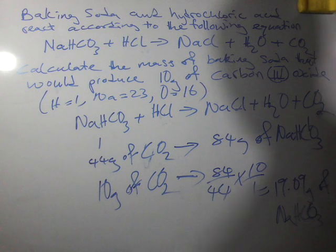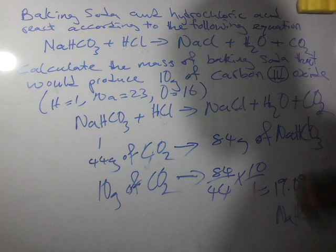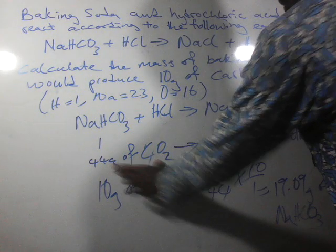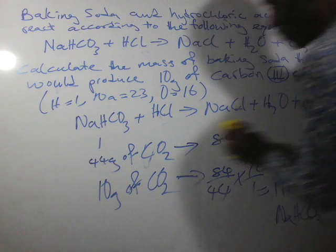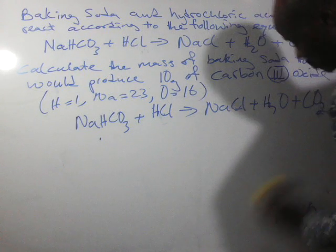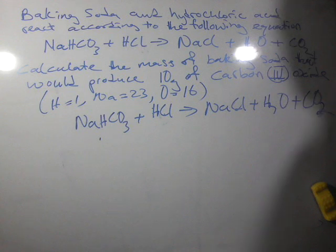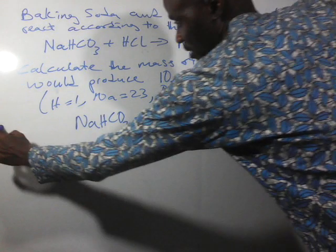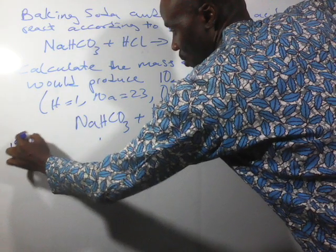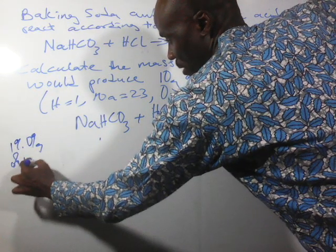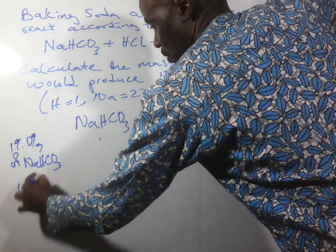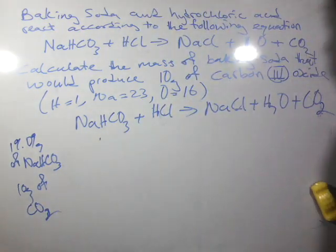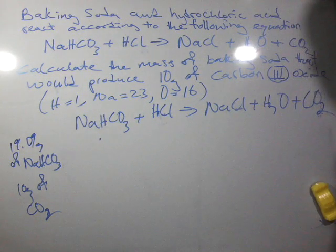When dealing with volumes, we look at what we call the molar volume. So let's say we are now asked: given that 19.09 grams of baking powder produced 10 grams of carbon dioxide, what volume of carbon dioxide would be produced?